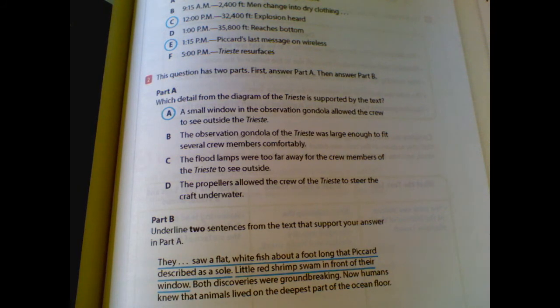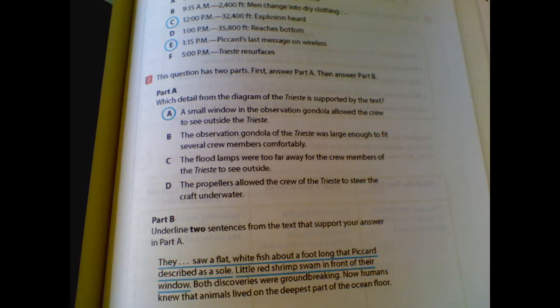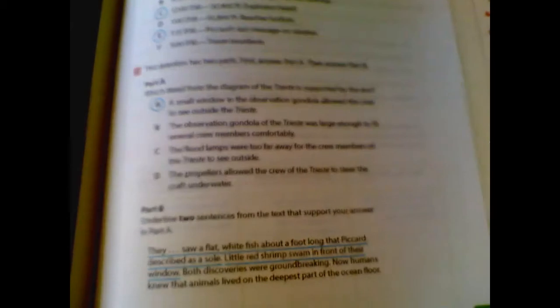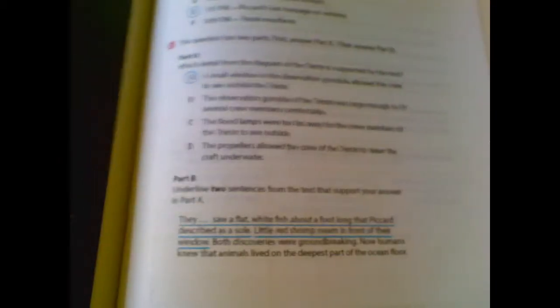B contradicts paragraph 3, which says the crew members were jammed in and could barely move. C contradicts paragraph 7, which says the crew flashed lights and saw outside their window. And D focuses on the propellers. These are shown in the diagram but are not mentioned in the text. So your best answer was A.